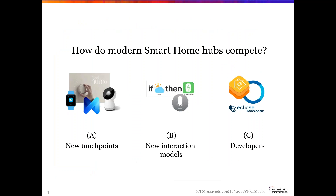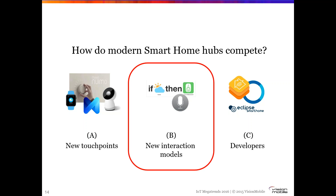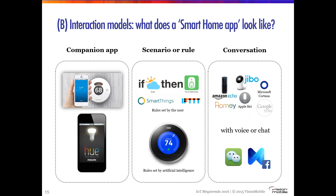We see companies from very different backgrounds: consumer electronics companies like Samsung, cable companies, internet providers, telephone companies like AT&T or Comcast, and even e-commerce players — Amazon is working hard to position itself as the center of the home. Developers have taken notice and are also flocking to the smart home; it's the most popular IoT vertical in our surveys. Developers are an important part of making these hubs work, adding functionality and making those connections that make a smart home truly smart.